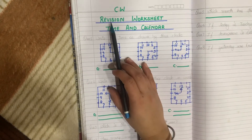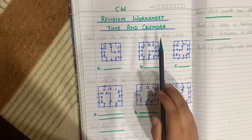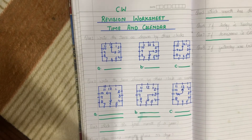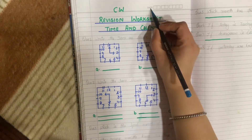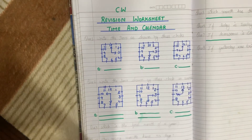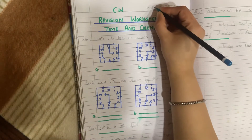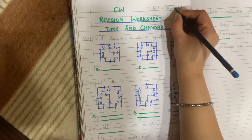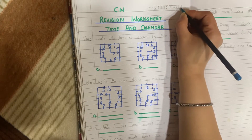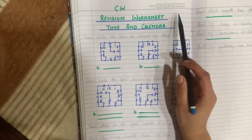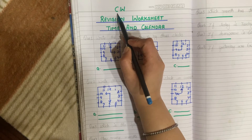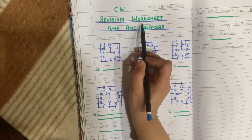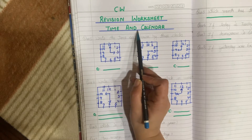Today we'll do revision. This is your revision worksheet of the chapter time and calendar. First of all, write today's date — today is 2nd March 2021. Write down the date. Write class work using a sketch pen. Write the heading: revision worksheet and the chapter name, time and calendar.